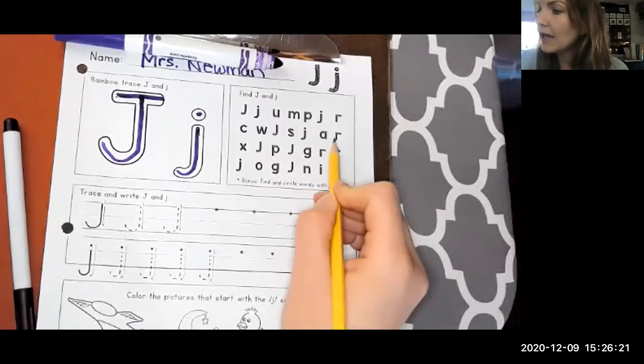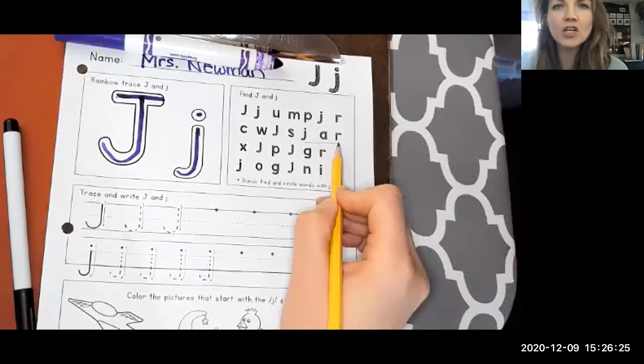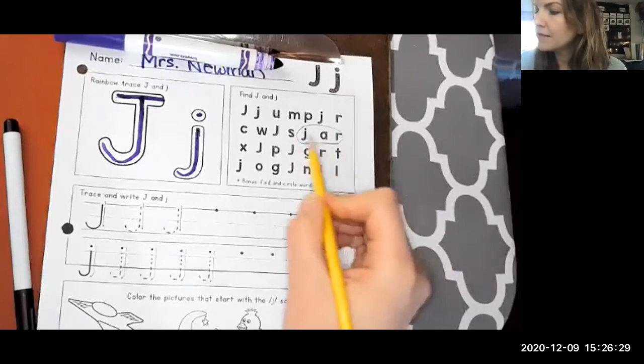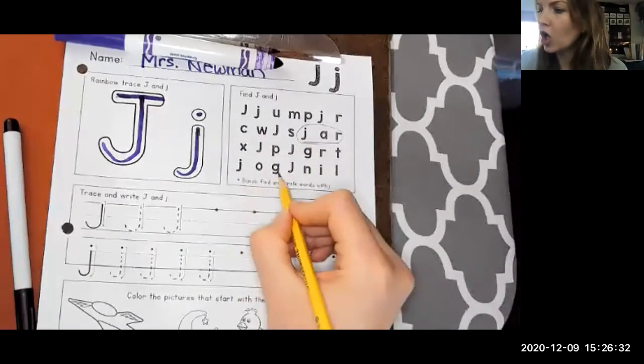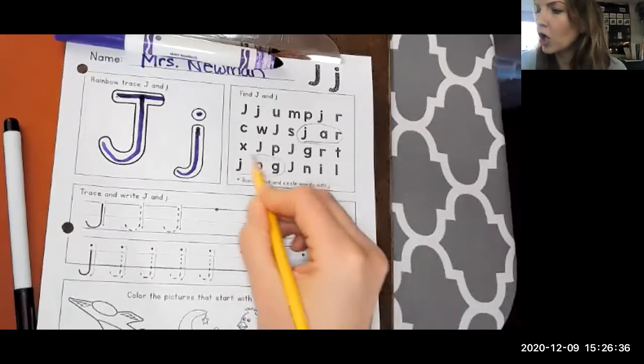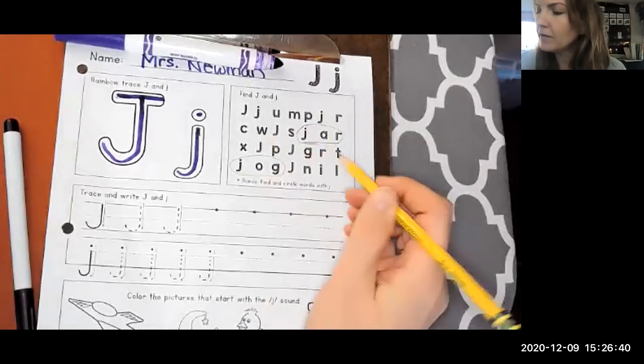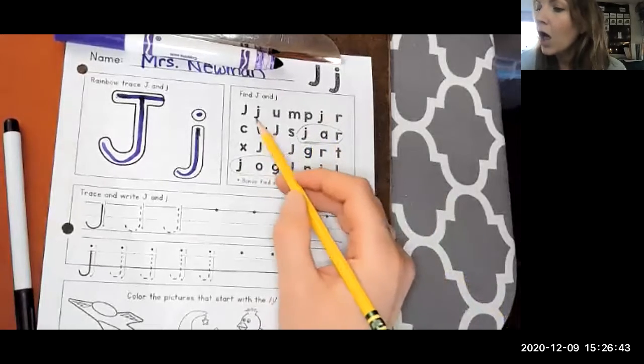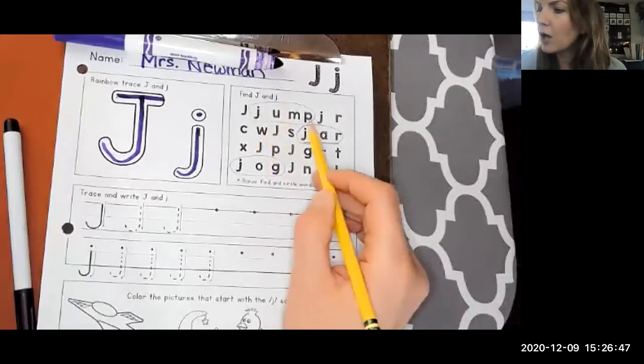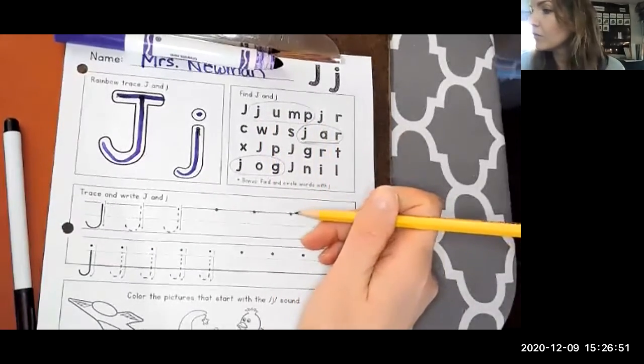So I see jar, J-A-R. Remember, J makes that J sound. I see jog, J-O-G. Hmm, anything else? Do the words go up and down at all? Did you find jump? If you did, great job. Those are all great words.